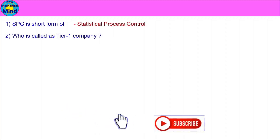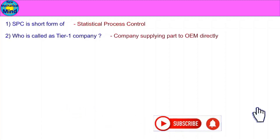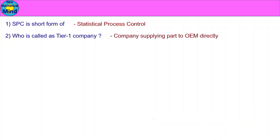Who is called a Tier 1 Company? A company supplying parts to OEM directly is called a Tier 1 Company.